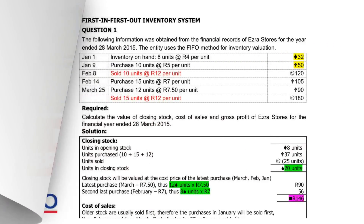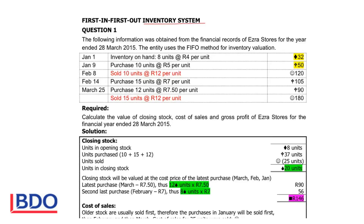Good afternoon. We will pay attention to the first in first out inventory system of cost evaluation. The information is given telling us that the FIFO method is used. That means the first goods purchased will be sold first, and the last goods purchased will form part of the closing inventory.